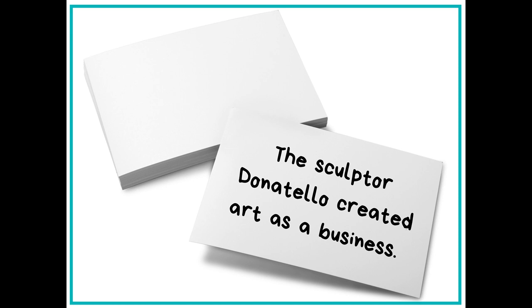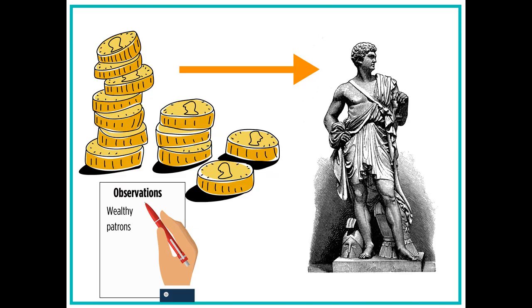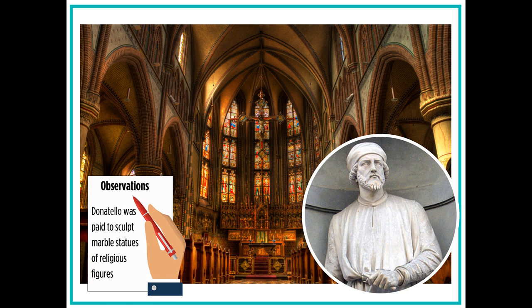Next, students will read a clue about the sculptor Donatello, who created art as a business and was paid to depict important people, some of them very religious. Students will need to find a sculpture made by Donatello in 1415 that depicts Saint Mark and is made of marble. Students will need to write down that patronage was important to the Renaissance — patronage means that wealthy people of Italy used their money to pay artists. Without this money, artists would not have been able to create so many sculptures, paintings, and even decorations for churches. Students should also write down that Donatello was a sculptor paid to create marble sculptures of religious figures.